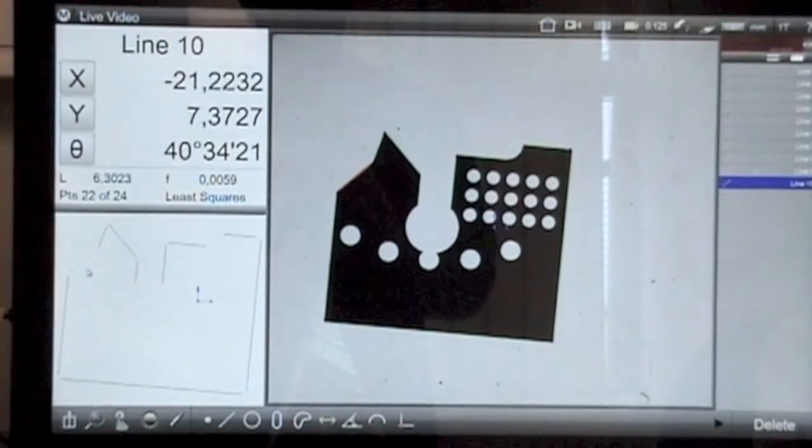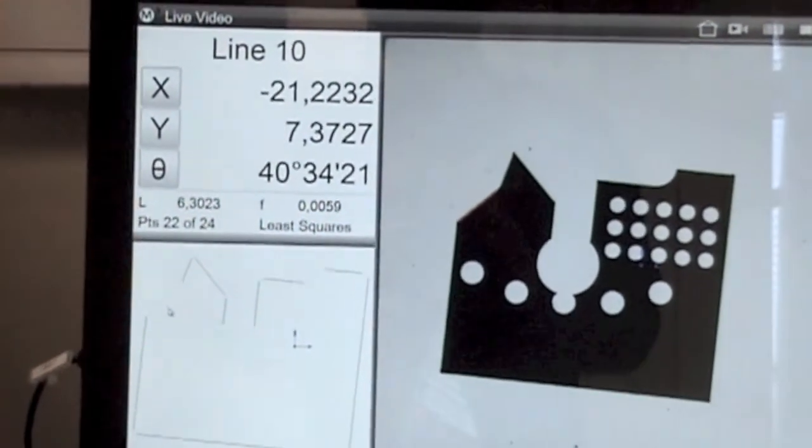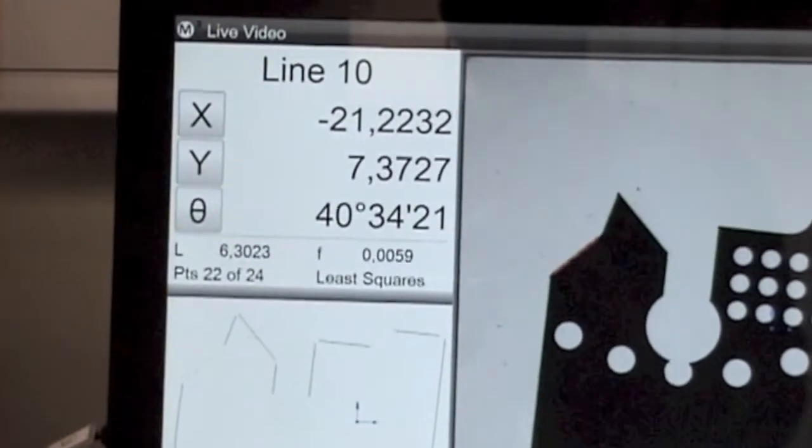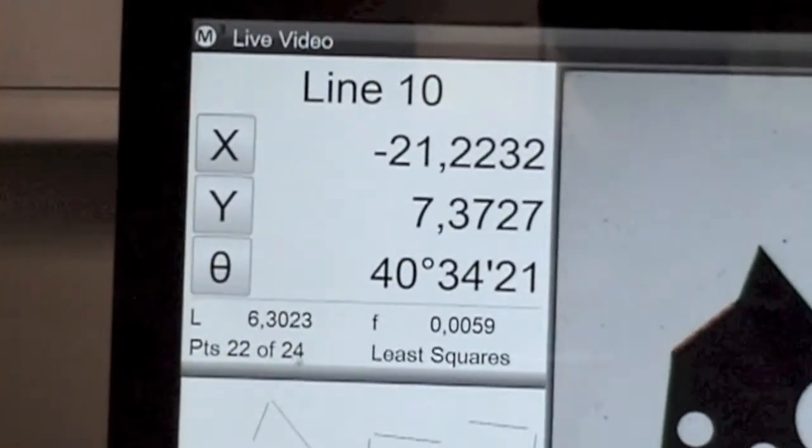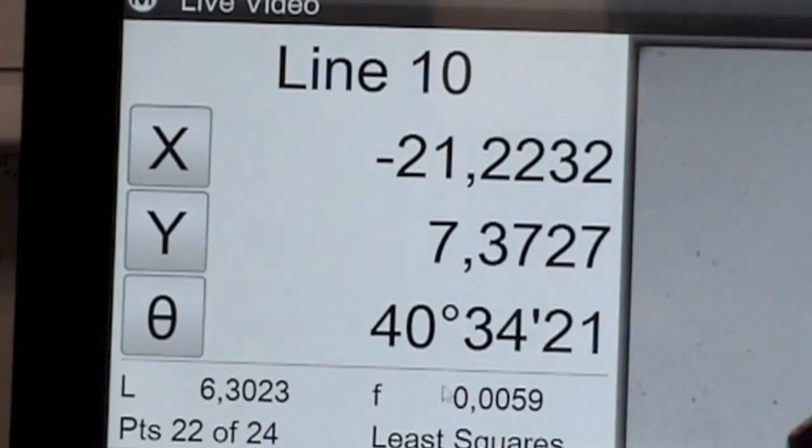The top left hand panel indicates that 22 points were detected and a least squares line was fitted through these points at an angle of 40 degrees 34 minutes and 21 seconds, with the center point of that line shown at the above coordinates.